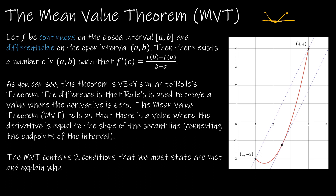In the Mean Value Theorem, we're still going to have a continuous and differentiable function, and we'll still have to show that that is true. But what it's saying now is we don't need f(a) to equal f(b). We're saying that the slope of the line created by the endpoints of the interval — that this slope at some point in the interval is going to equal the tangent line of the function at some point. So we're going to be finding that point c. We still have to show that it's continuous and differentiable, but now we're going to be using the slope formula.